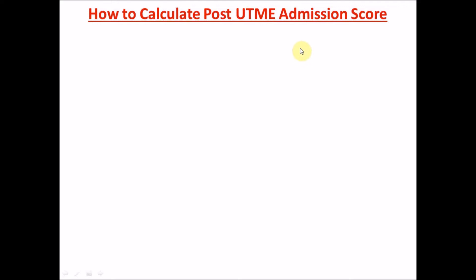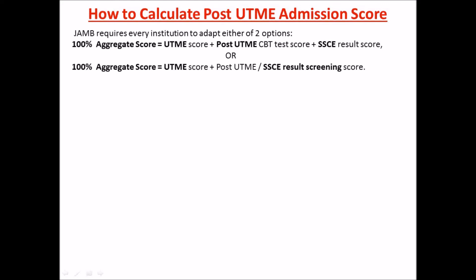So how do you calculate your admission score? JAMB requires every institution — every university or polytechnic — to adapt to one of these options for their aggregate score. The aggregate score will be 100. It's either a combination of your UTME score, Post-UTME score, and WAEC results, or just your UTME score and Post-UTME, or just your UTME and WAEC results — it depends on which the school chooses.